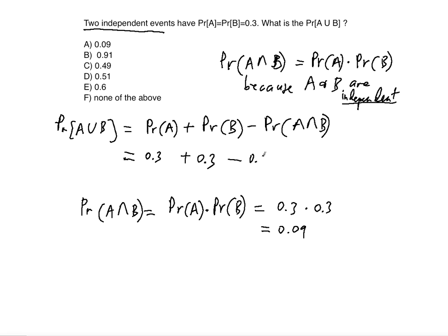0.3 times 0.3 gives us 0.09. Substituting into the formula: 0.3 plus 0.3 minus 0.09, which equals 0.6 minus 0.09.